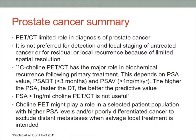In summary for prostate cancer, PET-CT has a limited role in diagnosis, local staging of untreated cancer, and residual local recurrence due to limited spatial resolution. Choline PET is coming to the forefront for biochemical recurrence following primary treatment, depending on PSA value, doubling time, and velocity — the higher the PSA and the faster the doubling time, the better the predictive value. If PSA is less than 1 ng/mL, choline PET is not useful. It may play a role in selected patients with higher PSA levels and poorly differentiated cancer to exclude metastasis when salvage treatment is intended.